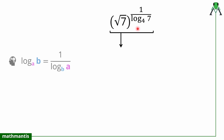The first property of logarithm I will use is the logarithmic base change theorem: log to the base a of b can be written as 1 upon log to the base b of a. So when we take the reciprocal of a logarithm, the base and the argument interchange.